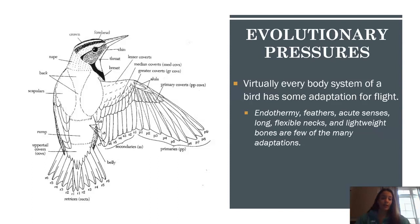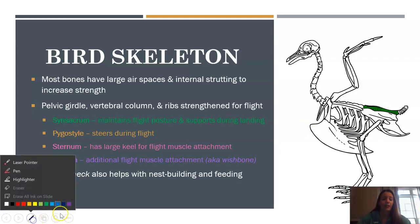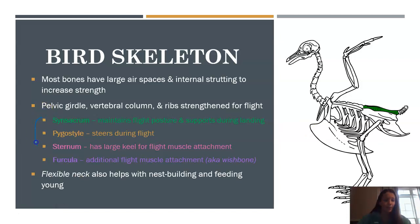In terms of flight, everything about birds is essentially shaped by evolutionary pressure on the ability to fly. The feathers, the senses, the bones — all those adaptations are what makes birds capable of flight today. The bird's skeleton has some important structures we haven't seen so far. There are four main things to focus on: the synsacrum, the pygostyle, the sternum, and the furcula.